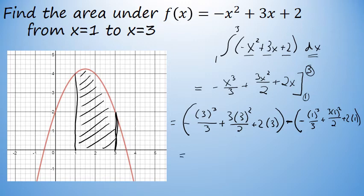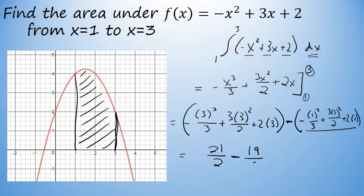3 cubed over 3 is 27 over 3, or negative 9, plus 3 times 3 squared which is 27 over 2, plus 2 times 3 which is 6. Then subtracting the second term: negative 1 to the third over 3 is negative 1 third, plus 3 halves, plus 2, which has a sum of 19 sixths. 21 halves minus 19 sixths is 22 thirds.